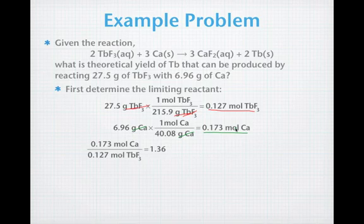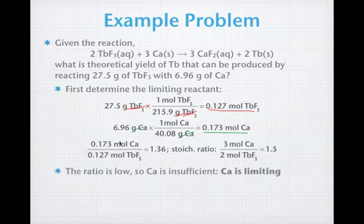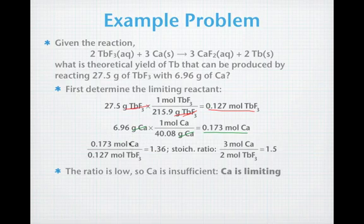Our first ratio is the moles of calcium to the moles of terbium-3-fluoride. You'll notice I put the one that has the higher coefficient, 3, up on top, and the moles of terbium-3-fluoride on the bottom. Compare that to our actual stoichiometric ratio, 3 to 2 is a ratio of 1.5. Since the ratio is too low, that means the terbium-3-fluoride is more than enough, and the calcium must be limiting.